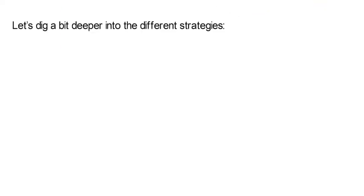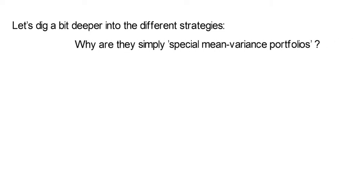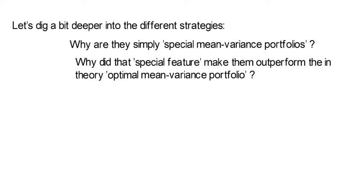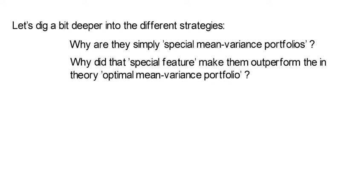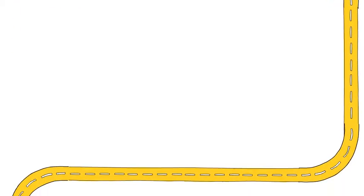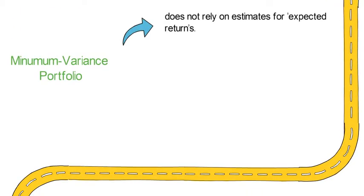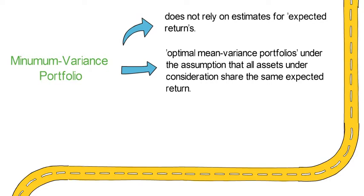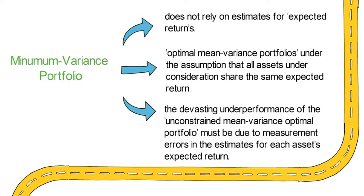Let's dig deeper into why these strategies are simply special mean variance portfolios. We start with the minimum variance portfolio: it does not rely on estimates for expected returns. One could say such portfolios are optimal mean variance portfolios under the assumption that all assets share the same expected return. From that, we deduce that the devastating underperformance of the unconstrained mean variance optimal portfolio must be due to measurement errors in estimates for each asset's expected return.